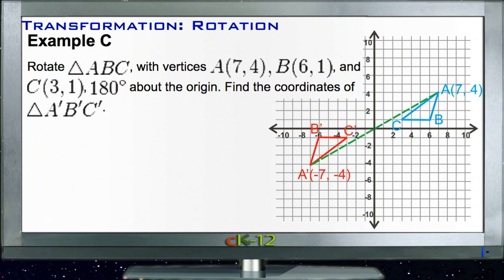And then finally for Example C, we need to rotate triangle ABC, so that's our blue one up here, that has vertices at 7, 4, 6, 1, and 3, 1.